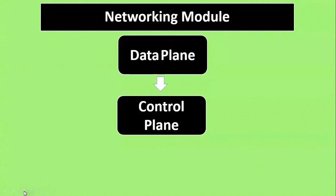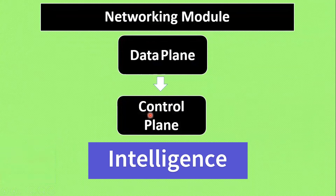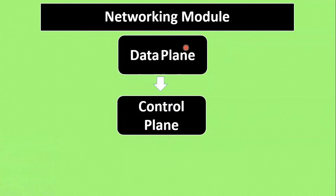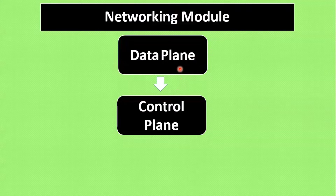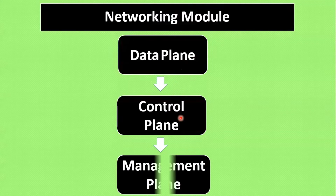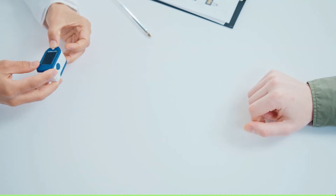The instruction is given by the brain. In the same way, the control plane is the mechanism that gives intelligence to the device, while the data plane is like the hands and the legs. Whatever instruction the brain gives, the legs and hands react accordingly. Similarly, the data plane and the control plane work together — the control plane gives all the instructions for sending and receiving packets.